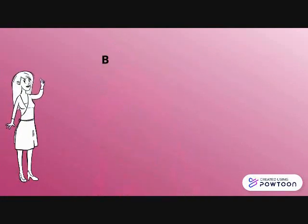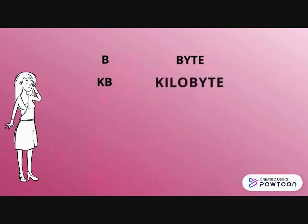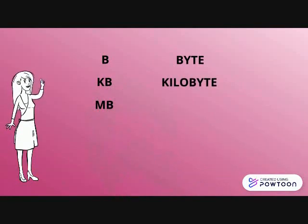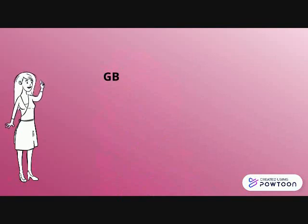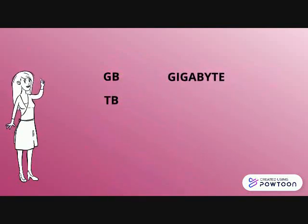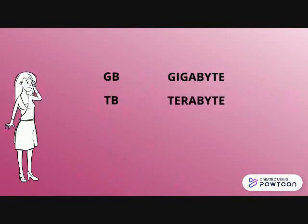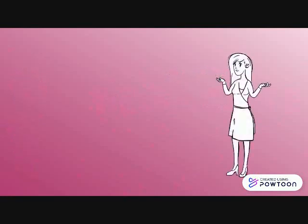B — Correct! It's a byte. KB — Very good! It's kilobyte. MB — Yes! It's megabyte. GB — Correct! It's a gigabyte. TB — Correct! It's a terabyte. How about PB? It's petabyte.